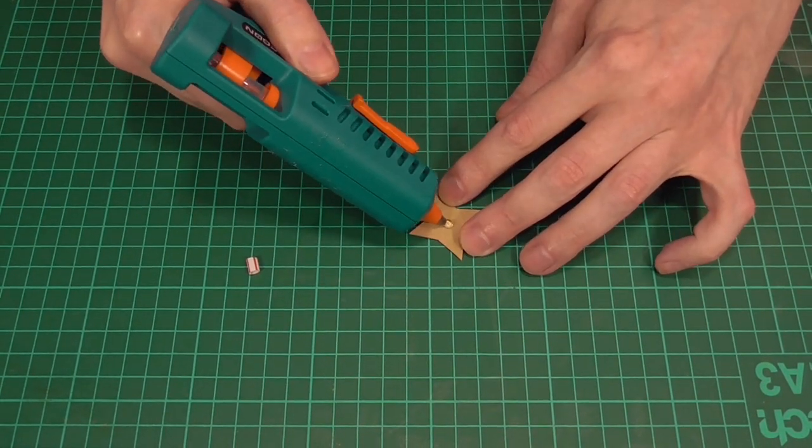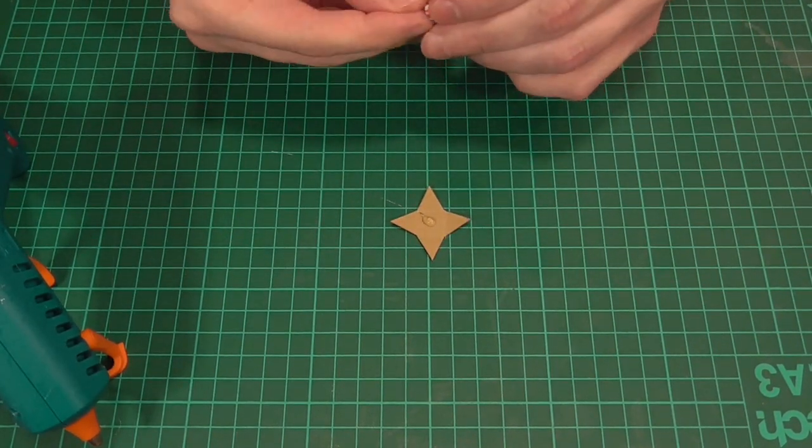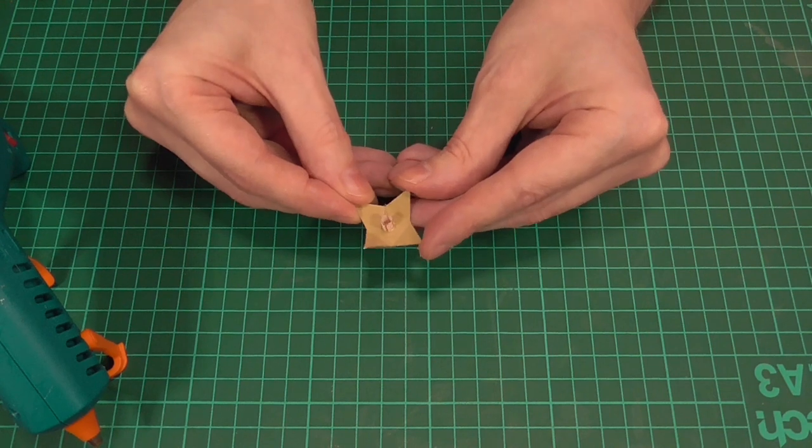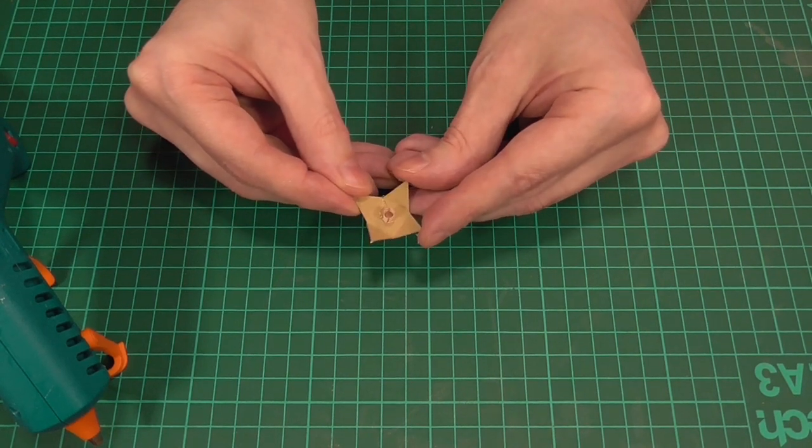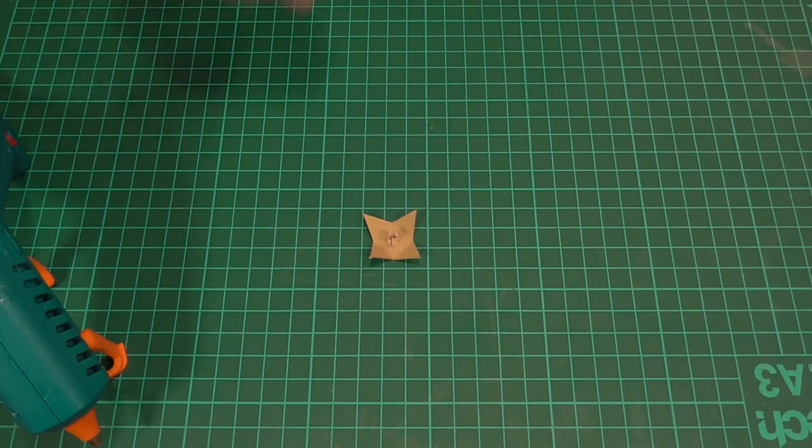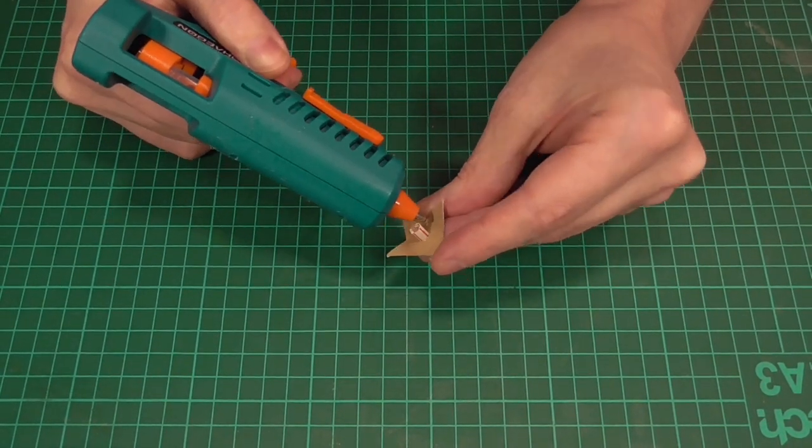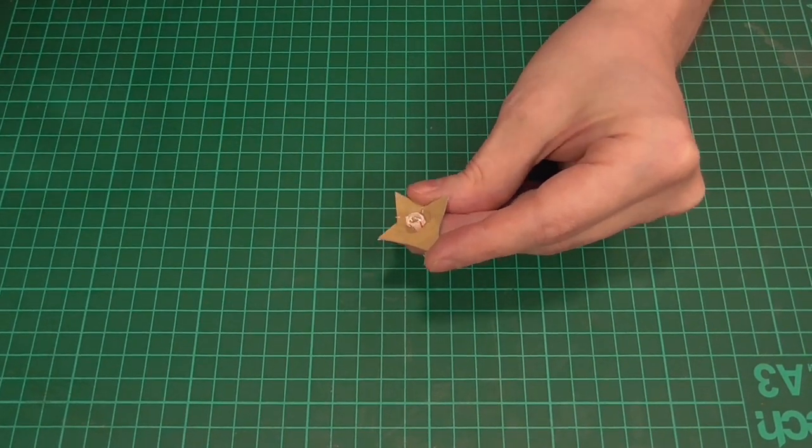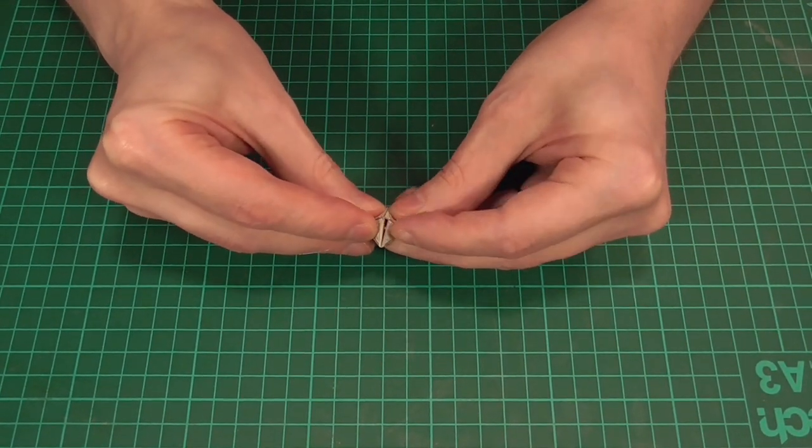We'll then take the glue gun and add a blob of hot glue to the center of the untextured side and stick the straw in the middle so that we end up with something that looks a bit like this. Okay next we'll just need to add a blob of hot glue to the top of the straw and all around the top edge.